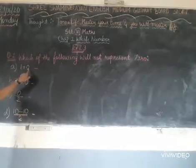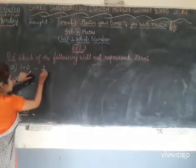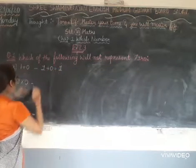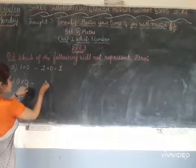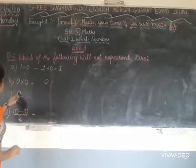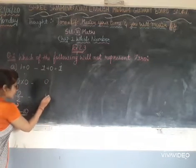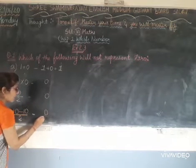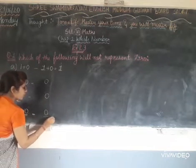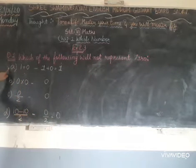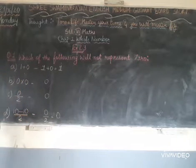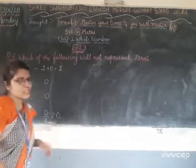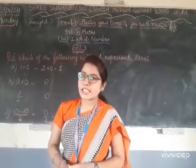1 plus 0 equals 1. 0 into 0 equals 0. 0 upon anything will be 0. 10 minus 10 equals 0. 0 upon 2 will give you 0. From options A, B, C and D, only option A does not represent 0.